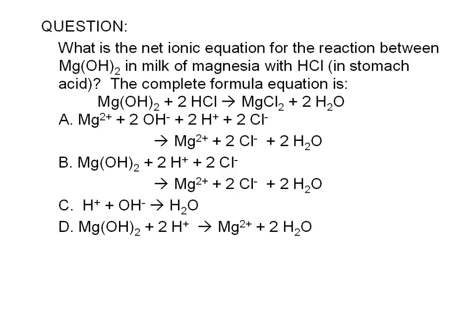What is the net ionic equation for the reaction between Mg(OH)₂ in milk of magnesia with HCl in stomach acid? The complete formula equation is magnesium hydroxide plus hydrochloric acid yields magnesium chloride plus water.